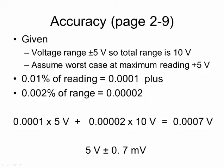So if the input voltage is 5 volts, the true reading would be 5 volts plus or minus 0.7 millivolts. This is a very small uncertainty and is unlikely to be important in practice. The uncertainties associated with other devices will probably be more important. The point of this example is to show you how to do the calculations using spec sheet information.